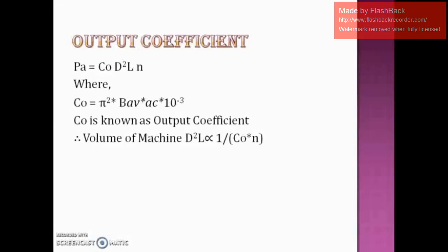The volume of the machine — meaning the volume of active parts — will decrease with increase in speed and/or increase in output coefficient. Therefore, the size and cost of the machine decrease with increase in speed and/or output coefficient. So, the volume and cost of the machine are very important considerations.